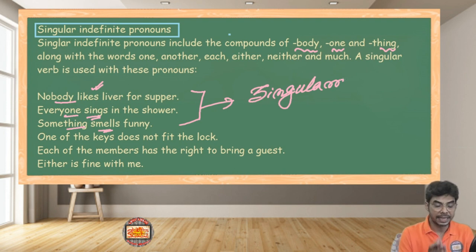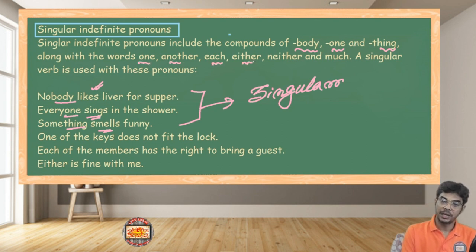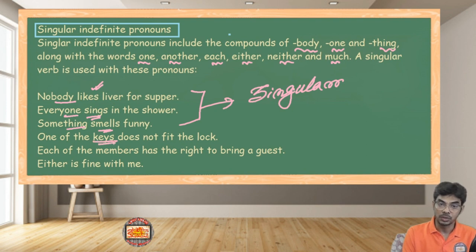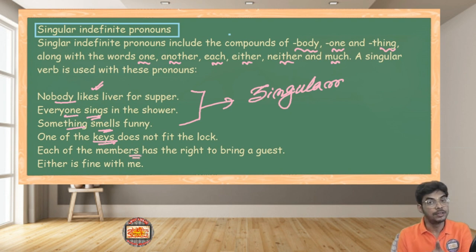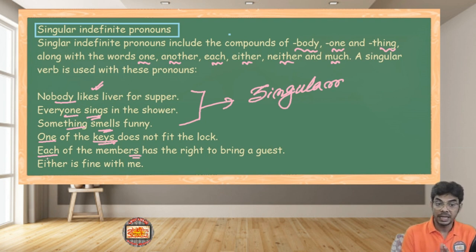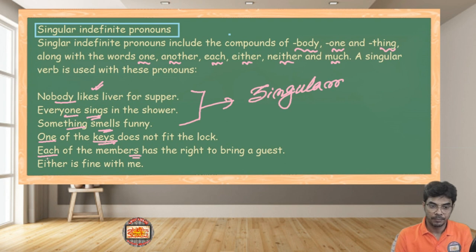You have to remember these expressions — body, one, thing — when these compounds are included, it's singular. Second, when pronouns like 'one,' 'another,' 'each,' 'either,' 'neither,' and 'much' are used, they obviously accept singular verbs. For example: 'one of the keys' — don't get confused by 'keys'; 'each of the members' — don't get confused by 'members.' Your focus should be on 'one,' 'each,' etc.